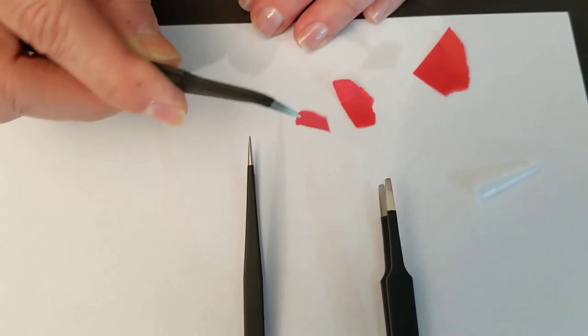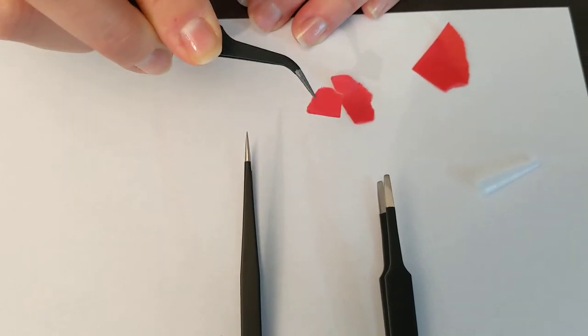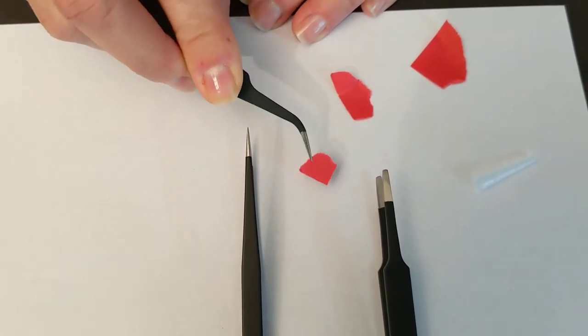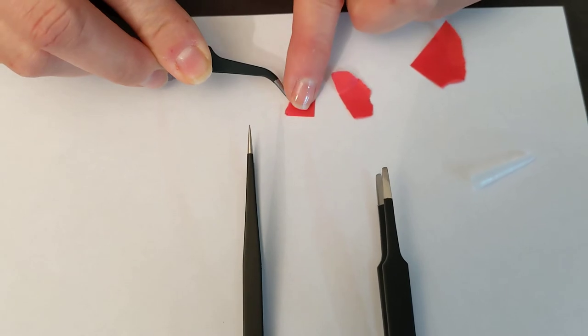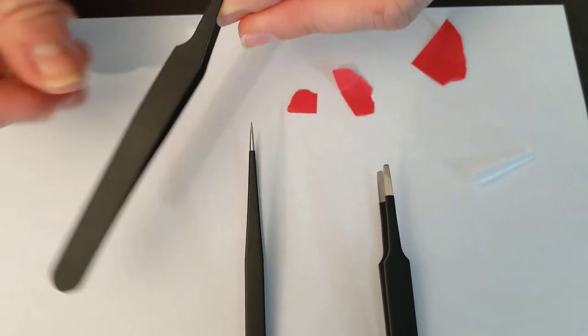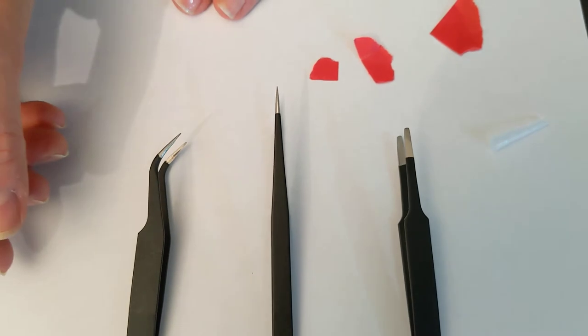So if you need something fine, a curved point can help you get into little areas where you need to selectively put an embellishment, a piece of paper, a sticker or whatnot.